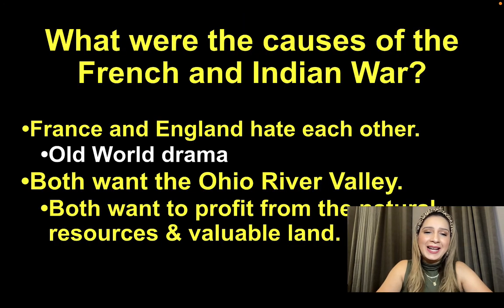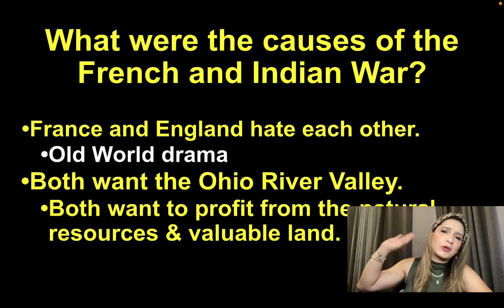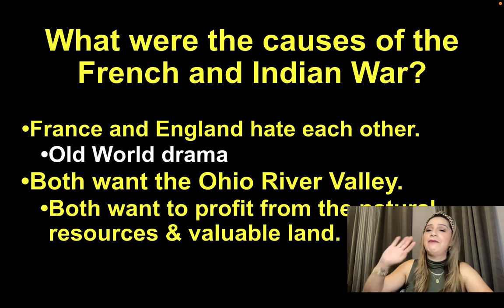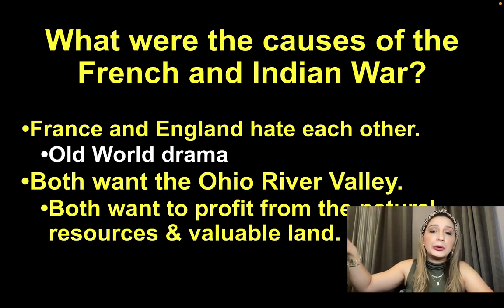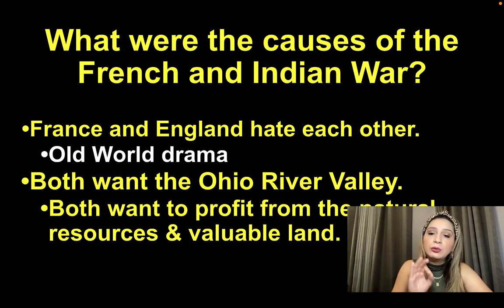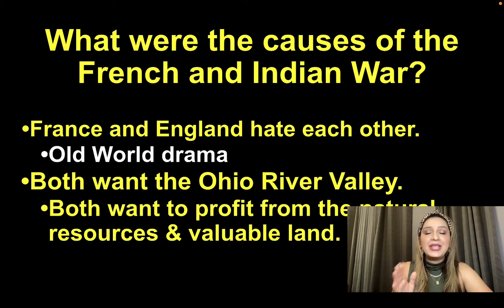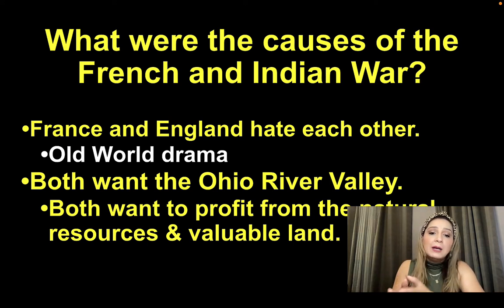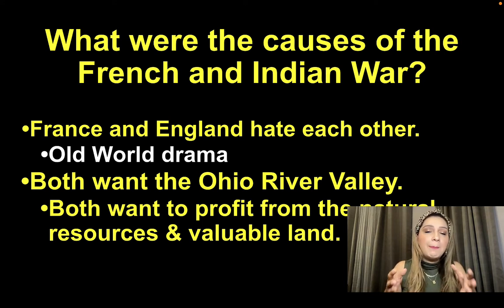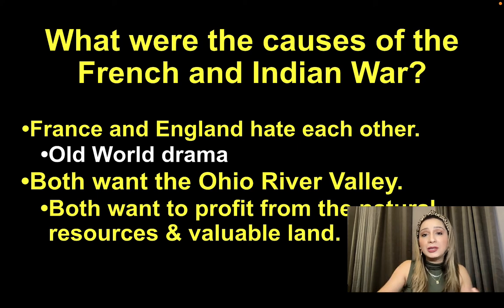France and England hate each other — this is called old world drama. They've hated each other for a long time as neighboring European countries. They both wanted that Ohio River Valley area — the land between the Appalachian Mountains and the Mississippi River — because it's very profitable, with an abundance of natural resources. It's valuable land. The French and the British were building forts in preparation for war because of this dispute over land claims.